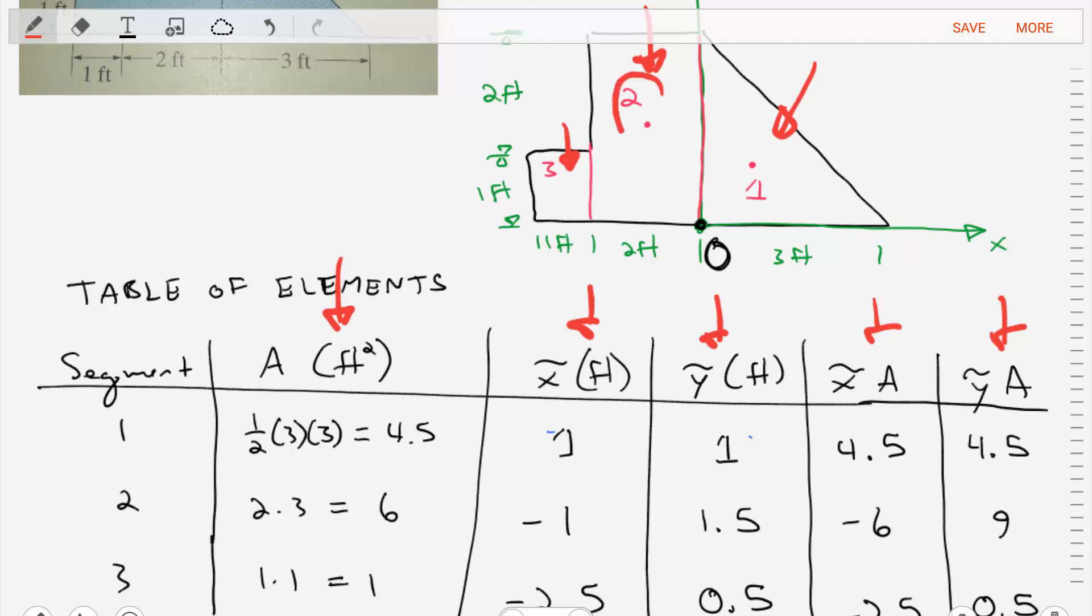For the second structure, the rectangle, we can find the area is simply the base times the height, so 2 times 3, which is 6. Its x position is at negative 1, and its y position is at 1.5, positive 1.5. We take those and multiply to get the next set of terms.